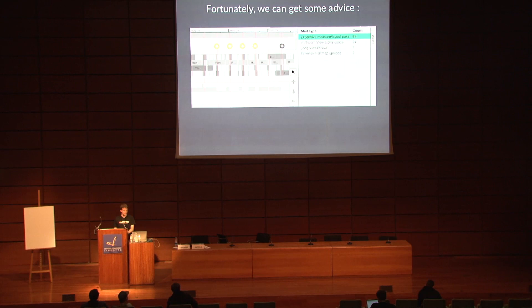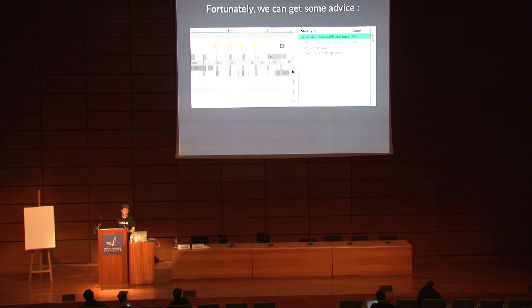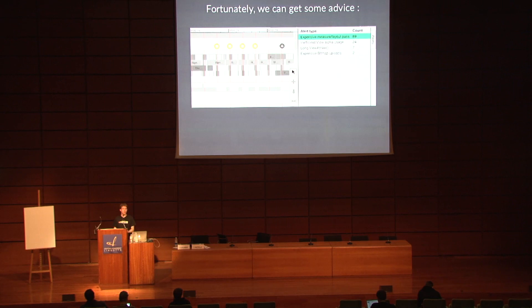Some costly draw operations — if that's your issue, you need to go back and listen to the 'flat as a pancake' talk. Some inefficient alpha usage — alpha transparency is always costly on Android; it's not well supported by all devices, so it's often an issue. If you can avoid using alpha and get the same rendering, do it. And finally, in our case, expensive measure/layout path. So we have layouting issues that prevent us from getting 60 frames per second.